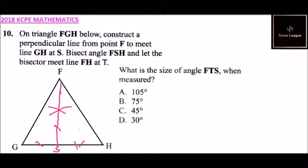You know how to bisect an angle. You make two marks like that and make another one using the two marks, and you draw a line that bisects the angle. Then it will meet FH at T.